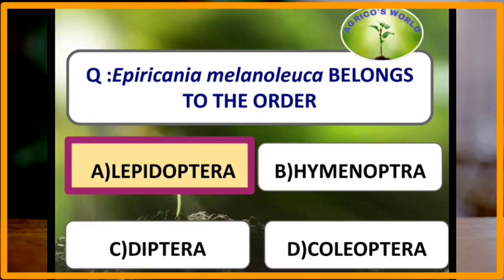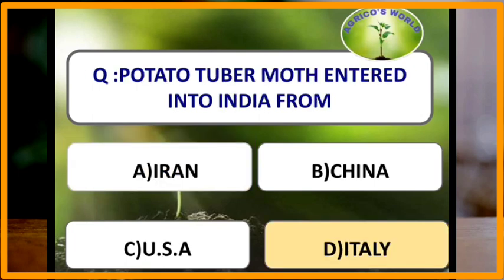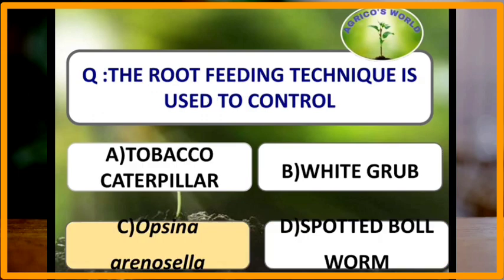Epiricania melanoleuca belongs to the order Lepidoptera. Potato tuber moth, that is Phthorimaea operculella, entered into India from Italy. Root feeding technique is used to control which pest? Root feeding technique is used to control Opisina arenosella, that is the coconut black-headed caterpillar.